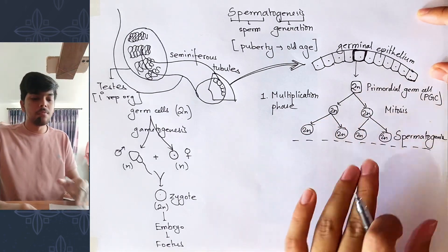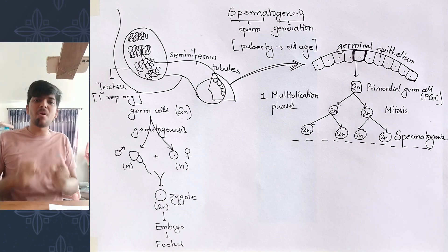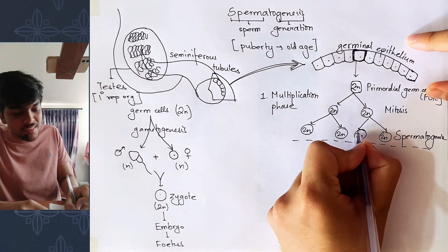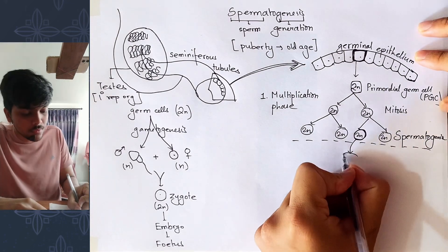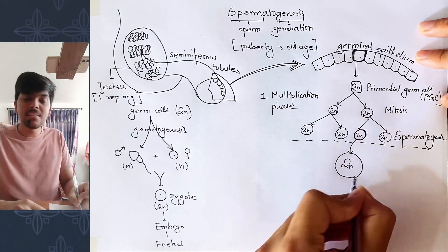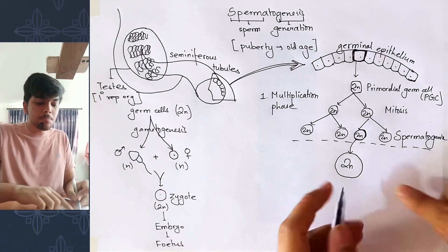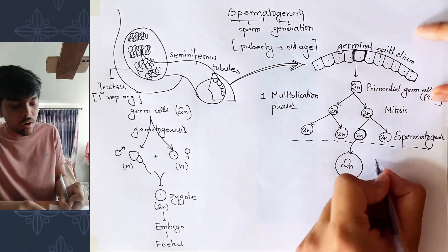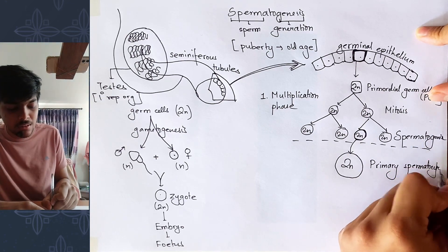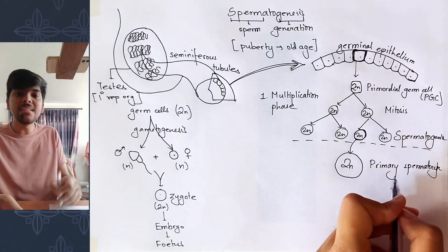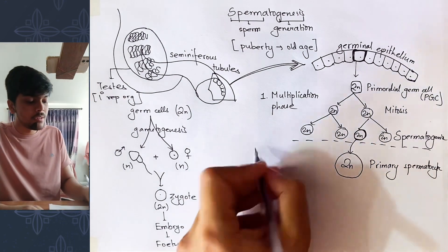From the several spermatogonia formed, a few spermatogonia devour as much nutrition as possible and grow in size. The genetic material inside the cell has not changed; the size has simply increased due to the intake of nutrition. This largest cell throughout the process is called the primary spermatocyte — the primary cell responsible for the formation of sperm. Because the size of the cell has grown, this phase is known as the growth phase.